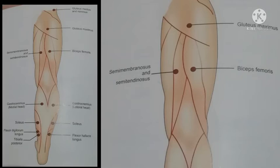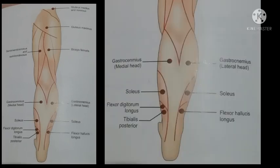The action of semitendinosus and semimembranosus is flexion of knee and medial rotation of leg. To stimulate biceps femoris, the pan electrode should be on the medial side of the posterior thigh. The action of biceps femoris is knee flexion and lateral rotation of leg.